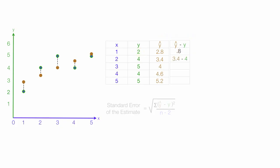Then I take 3.4 minus 4, which is negative 0.6. Then 4 minus 5, which is negative 1. And 4.6 minus 4, which is 0.6. And 5.2 minus 5, which is 0.2.